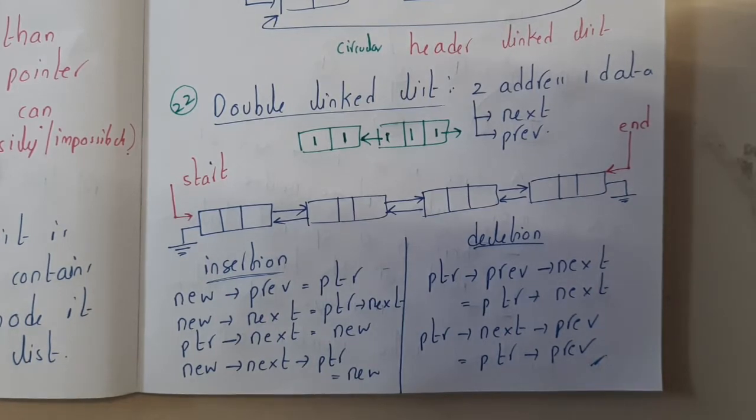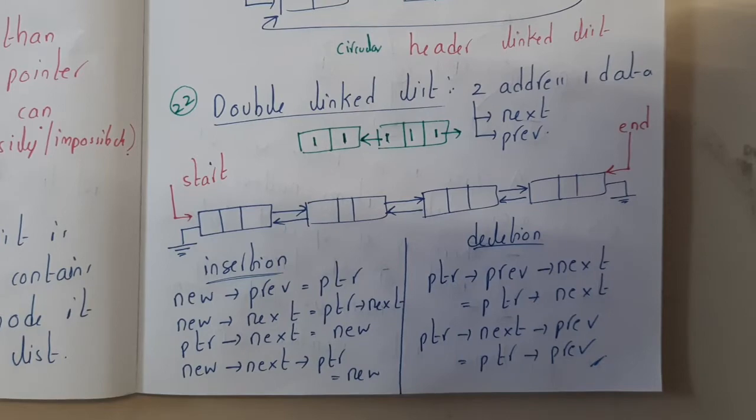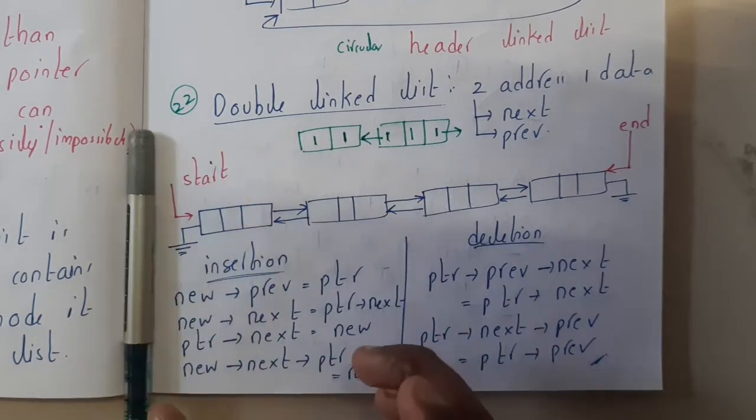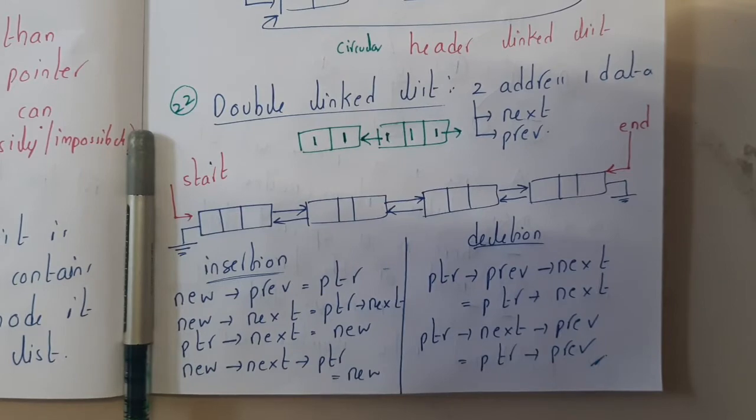Few things will be easy with respect to the doubly linked list because if you want to go backward you can go, which is a major advantage.